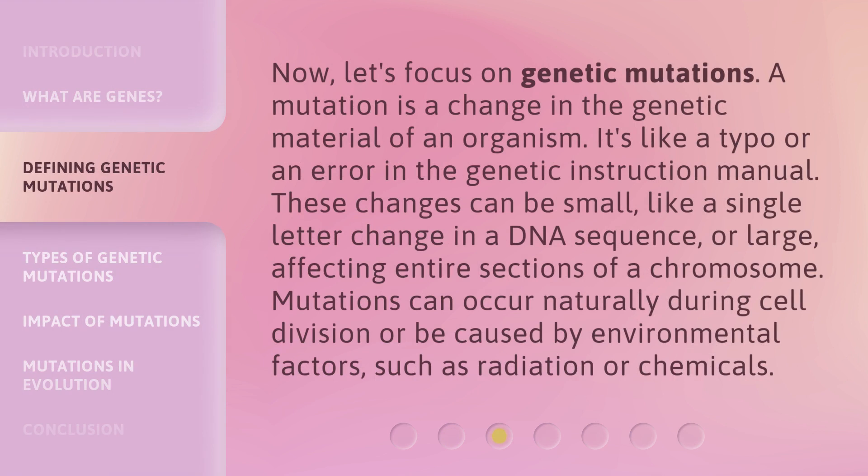Now, let's focus on genetic mutations. A mutation is a change in the genetic material of an organism. It's like a typo or an error in the genetic instruction manual. These changes can be small, like a single-letter change in a DNA sequence, or large, affecting entire sections of a chromosome. Mutations can occur naturally during cell division or be caused by environmental factors, such as radiation or chemicals.